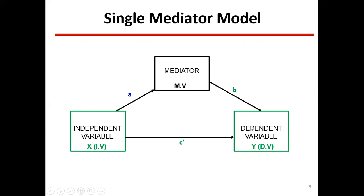Let us understand this with a graph. This is our independent variable and this is our dependent variable. Directly, the independent variable was affecting it. But what happened — a mediating variable came in the middle. The independent variable is affecting the mediator, and the mediator is affecting the dependent variable.